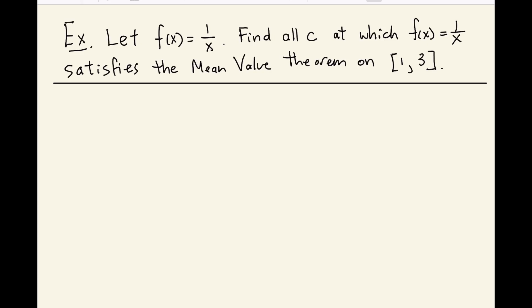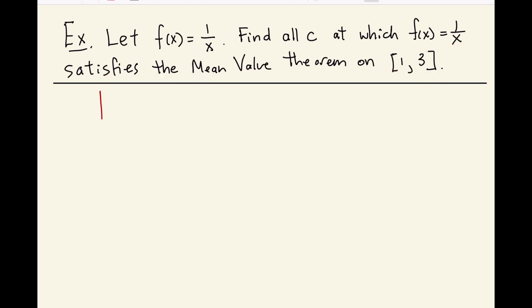Let's do an example where we actually apply the mean value theorem and find c. Our function is the reciprocal function 1 over x, and we're going to find all values of c at which our function satisfies the mean value theorem. The graph looks like a hyperbola, and it's only discontinuous at x equals 0 — that's the only value not in the domain.